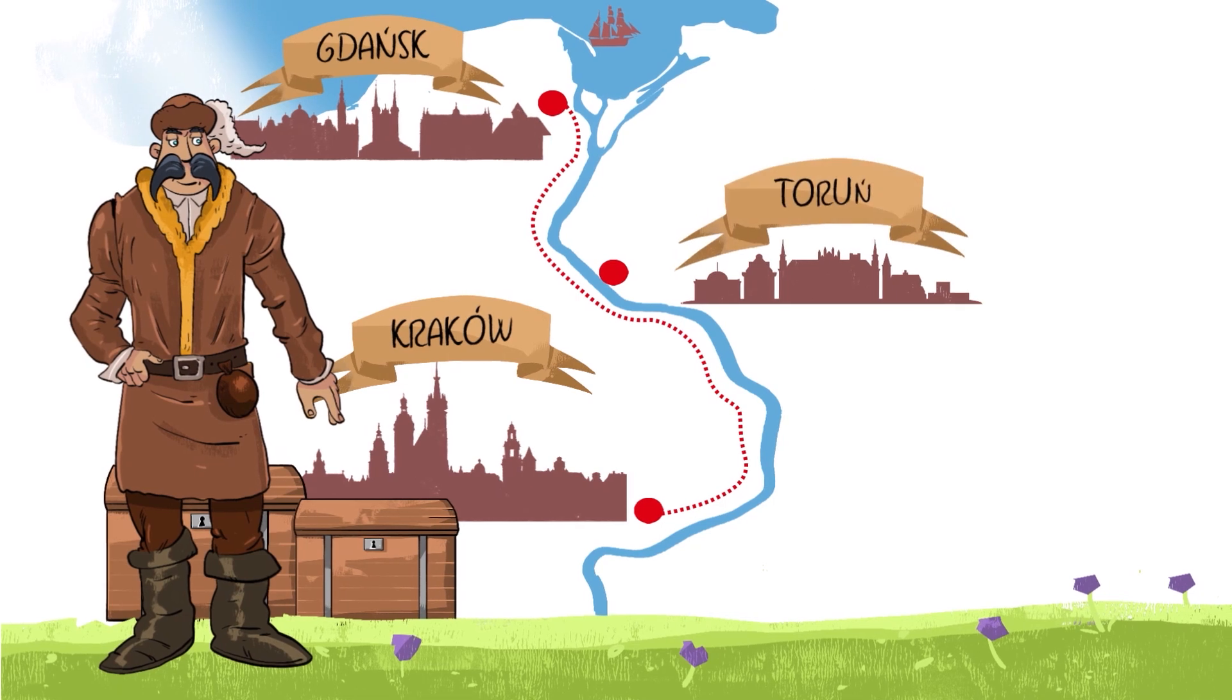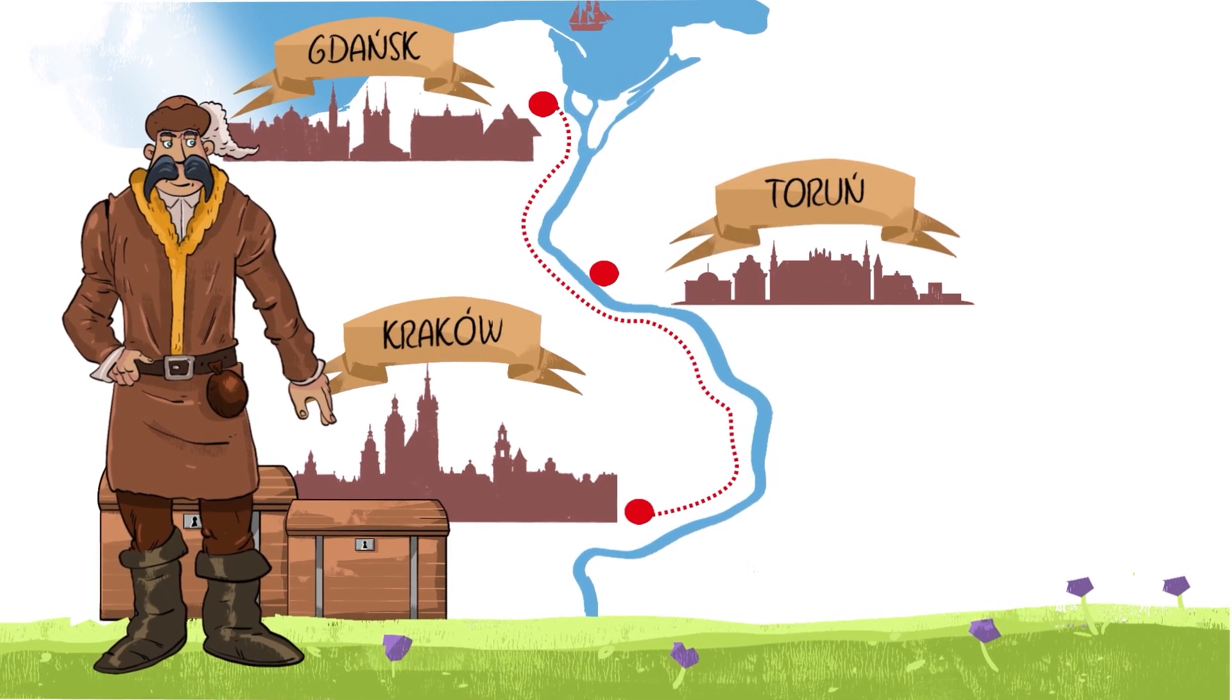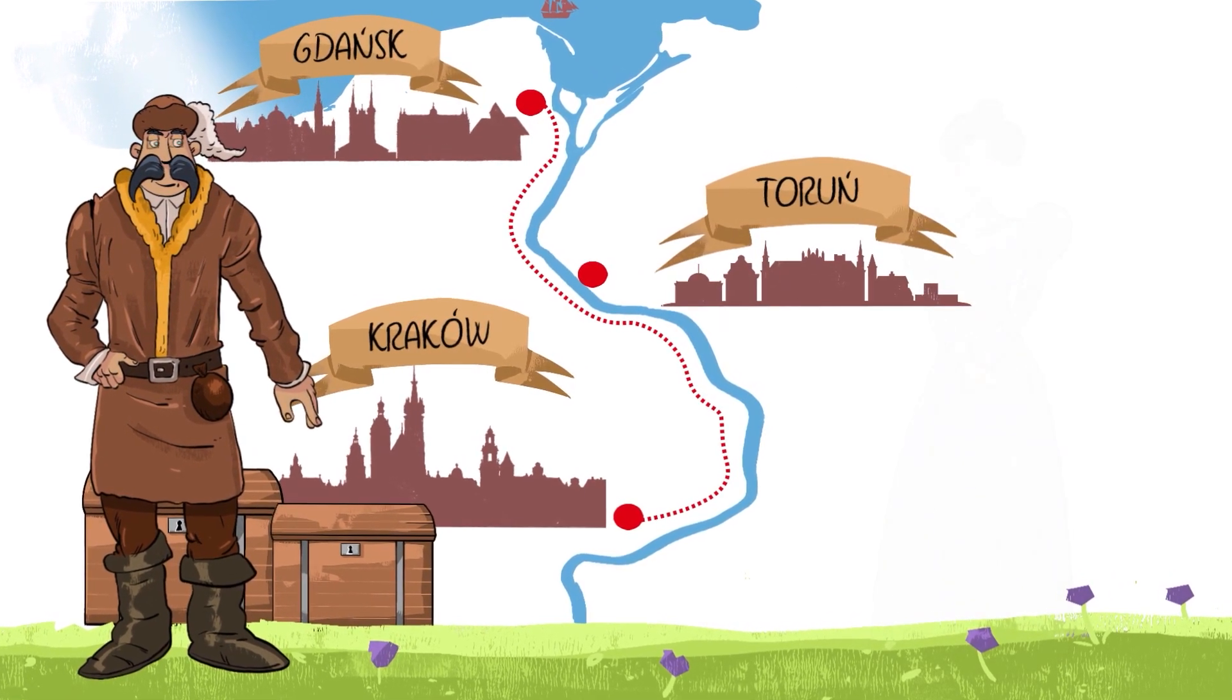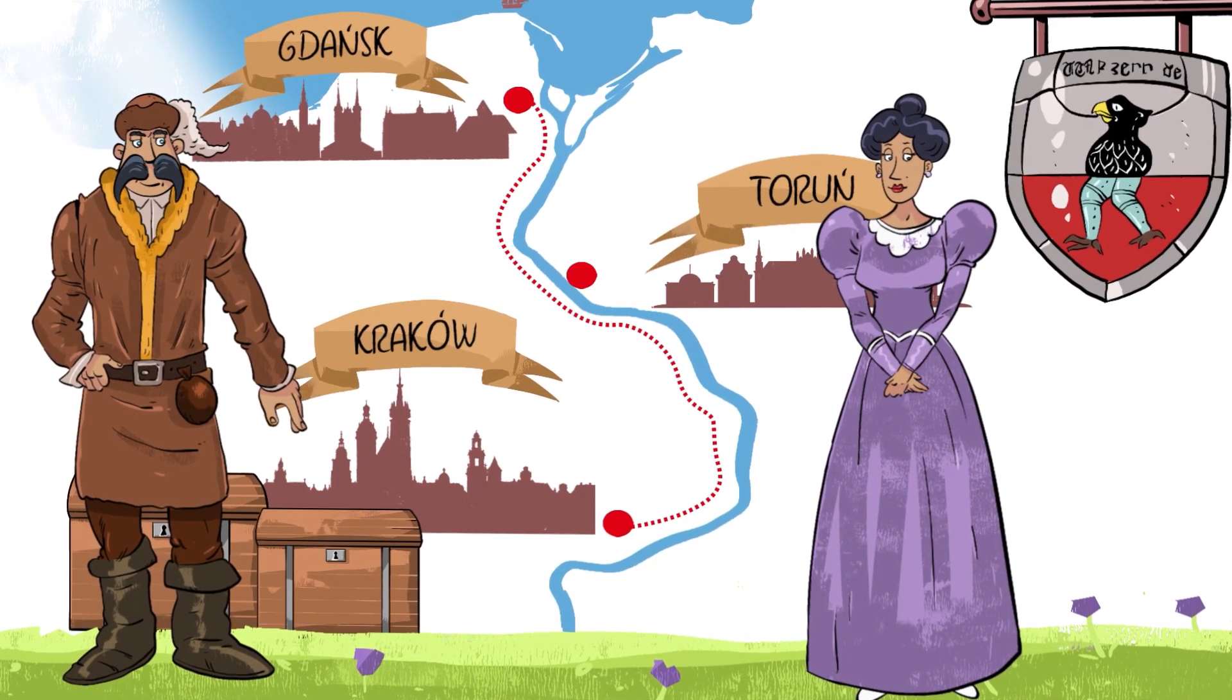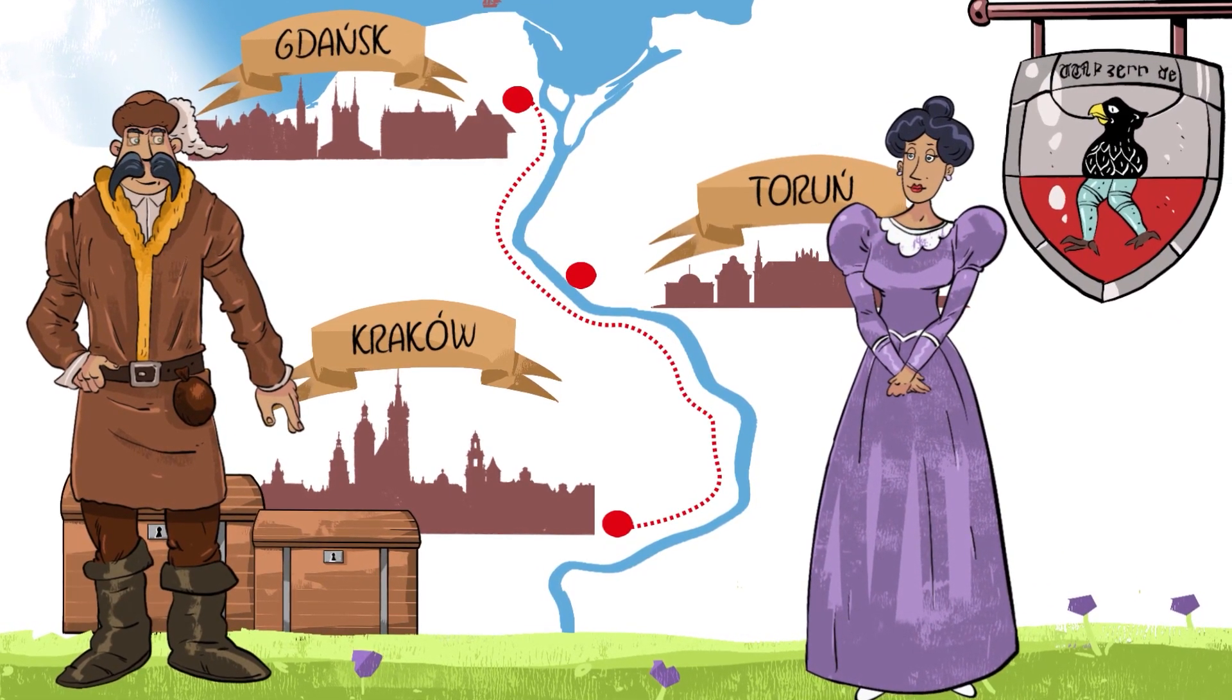The prosperous merchant was probably tempted by Torun's business opportunities. Barbara, Copernicus' mother, came from an influential and respected family of Watzenrode.